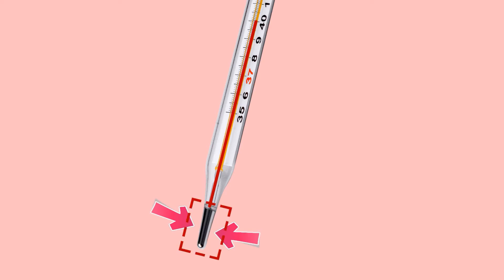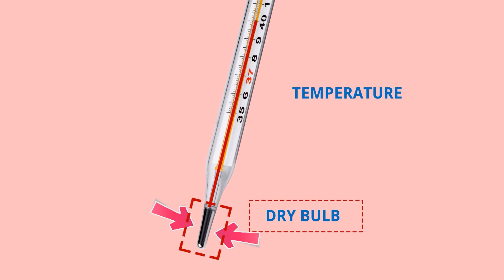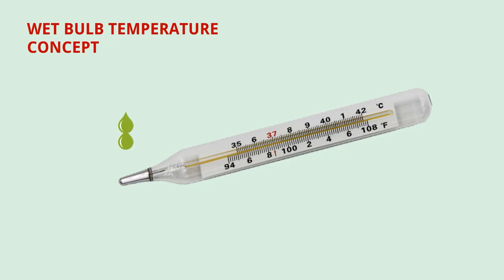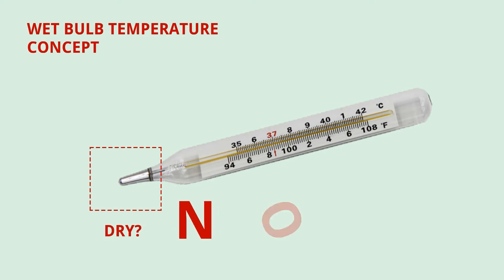This bulb is kept in atmosphere at dry conditions, so this bulb is called dry bulb and the temperature we measure with the help of this dry bulb is called dry bulb temperature. Now if you put some moisture on the bulb of this thermometer, the bulb is no longer dry — the bulb is wet.